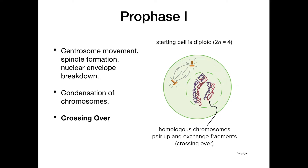During prophase 1 is when we have crossing over. Crossing over is the exchange of genetic information between two non-sister chromatids. The locations where crossing over actually occurs are called chiasmata. We can see this crossing over taking place — we exchange a portion of the purple chromosome with a portion of the maroon chromosome, and where that switch took place we form a chiasmata.